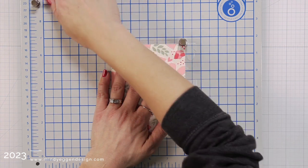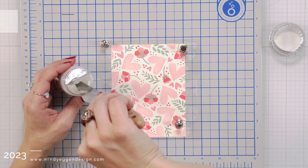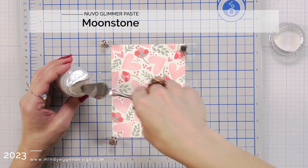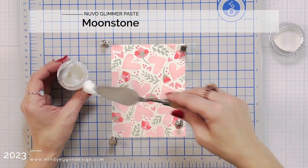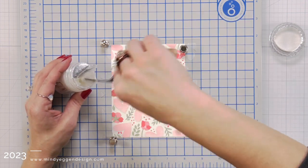Before I attach anything, I had an idea to add some sparkle to my background. So I brought that back to my magnetic station and I added that layer one stencil over the top. And I'm going to come in and I'm going to add some Moonstone Glimmer Paste.